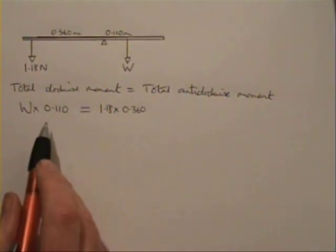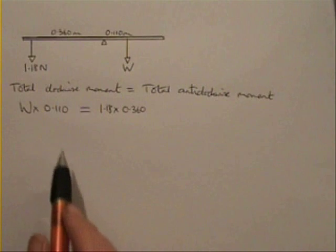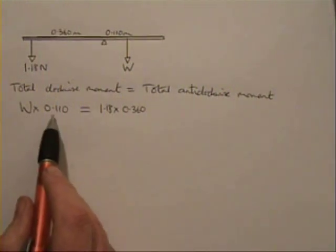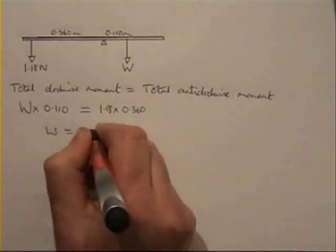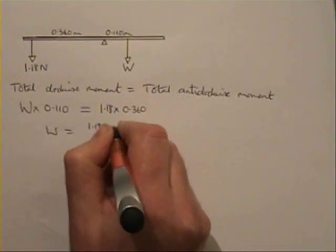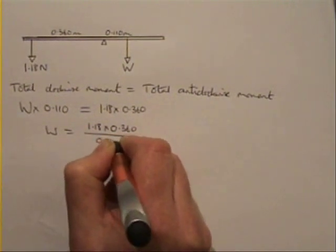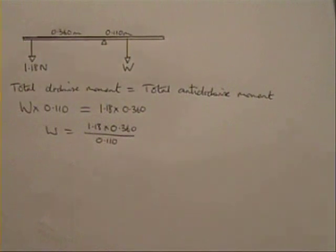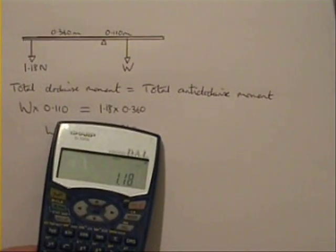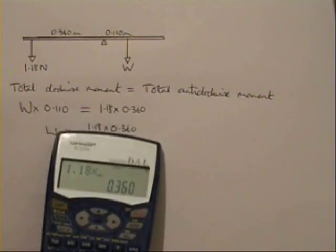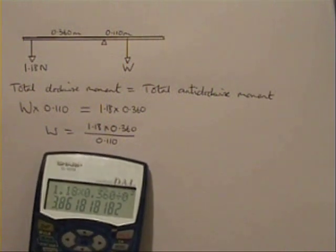So if I want to find W, then if we look at this equation, I could either multiply the numbers out now, but I find it a bit easier to look at the equation and see that to get W on its own I need to divide both sides of the equation by 0.110. So I can write W equals 1.18 times 0.360 divided by 0.110. So 1.18 times 0.360 divided by 0.110 which is 3.86 newtons.